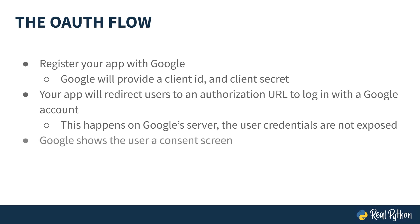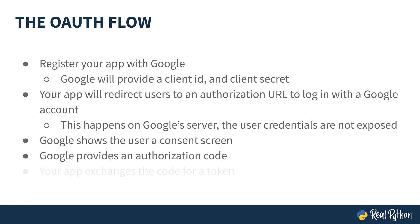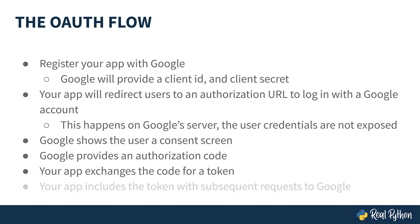After being authenticated, Google will present a consent screen to the user that contains the data your app wants to access. If the user consents, Google will provide your app with an authorization code. Your app will exchange that code for a token, and the token will be provided with subsequent requests to access the user's data.